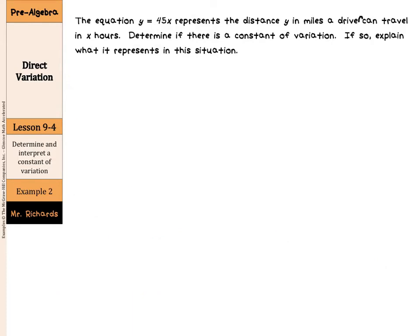In example two, we are going to determine and interpret a constant of variation. The equation Y equals 45X represents the distance Y in miles a driver can travel in X hours. Determine if there is a constant of variation. If so, explain what it represents in the situation.